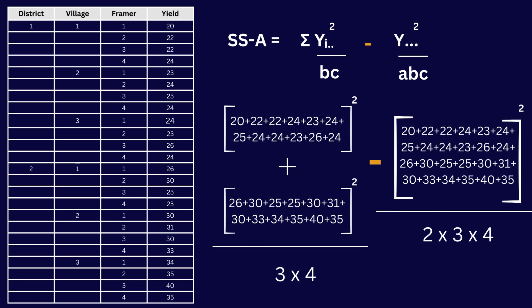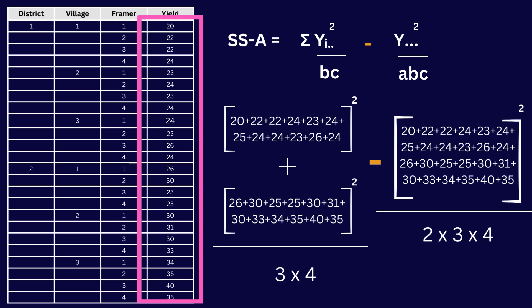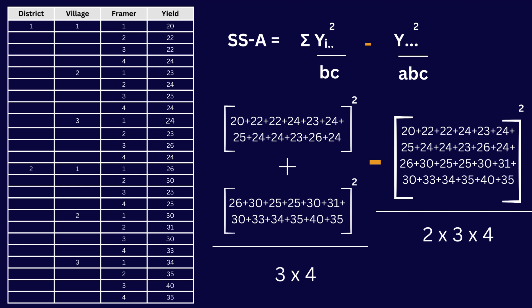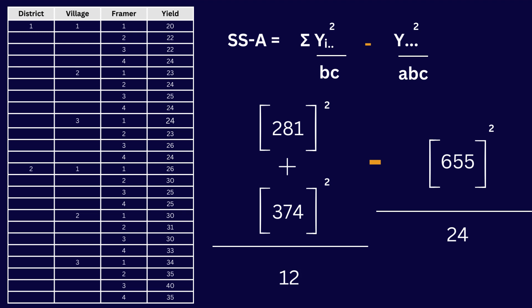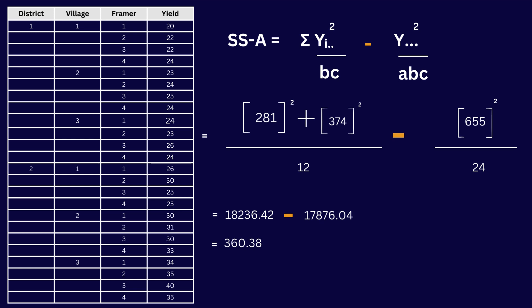Let's find the sum of squares values. The formula for sum of squares of A uses yi double dot, which is the sum of all yield values in a district, and yi triple dot, which is the sum of all yield values overall. Here, 281 is the sum of all yield values in district 1, 374 is the sum for district 2, and 655 is the total sum. After calculation, we get 360.38 as our sum of squares of A.